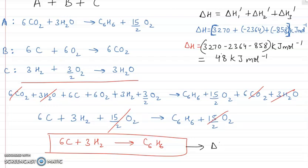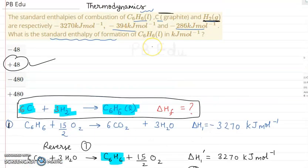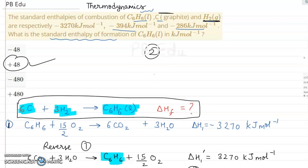The standard enthalpy of formation of C6H6 liquid from its stable elemental forms — carbon as graphite and hydrogen as H2 gas — is positive 48 kJ/mol, which corresponds to option B. Please subscribe to our channel PbEdu for more chemistry content and solutions, and feel free to ask any query in the comment section below.